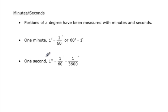Minutes and seconds. Portions of a degree or fractional part of a degree have been measured with minutes and seconds. So we define one minute, one with a single quotation mark. One minute is equal to 1/60th of a degree, or it takes 60 minutes to make one degree. And then we can break that down even further. One second is 1/60th of a minute or 1/3600th of a degree.